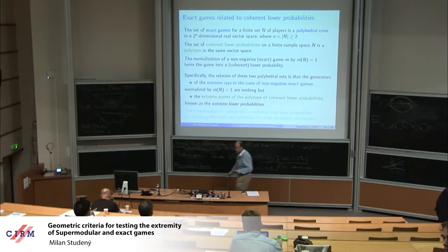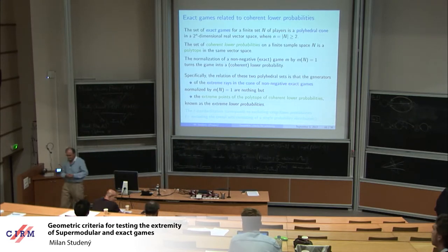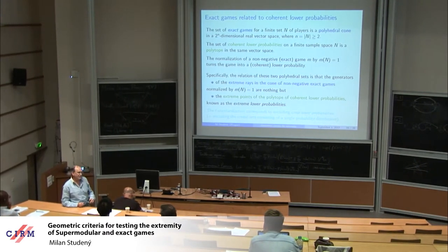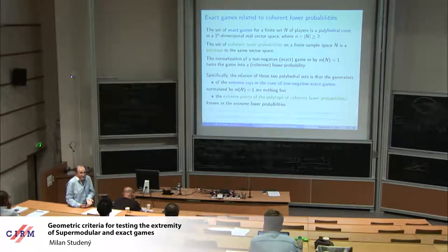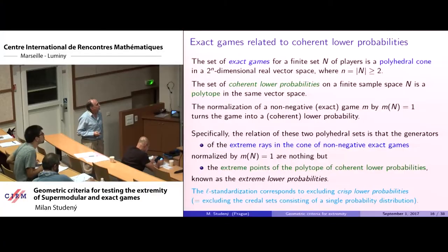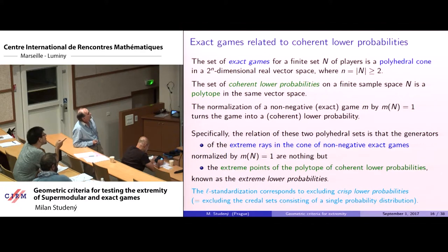To clarify: in imprecise probabilities, the lower probability is not itself additive — it is supermodular. Coherent lower probability corresponds to an exact game with the additional normalization M(N) = 1. The elements of the credal set are additive (probability distributions), while the lower and upper envelopes of the credal set are submodular and supermodular, respectively.